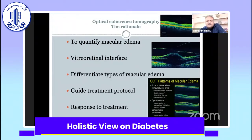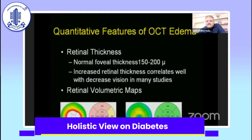The most important investigation tool is the OCT. It quantifies macular edema, provides information about the vitreoretinal interface — whether there is vitreomacular traction, epiretinal membrane, or vitreoschisis. It differentiates the different types of macular edema so treatment can be planned accordingly. It guides the treatment protocol, monitors response to treatment, and is a very important patient educational tool — the patient can see whether macular edema is increasing or decreasing with treatment.